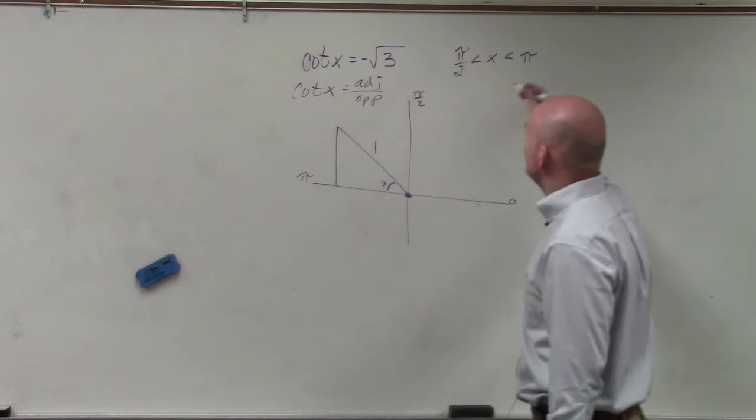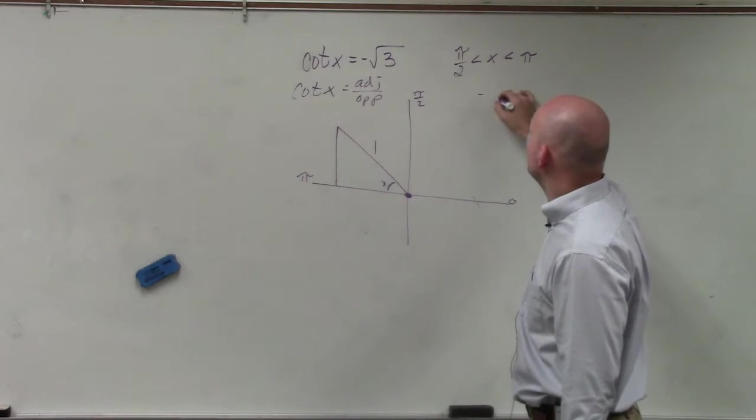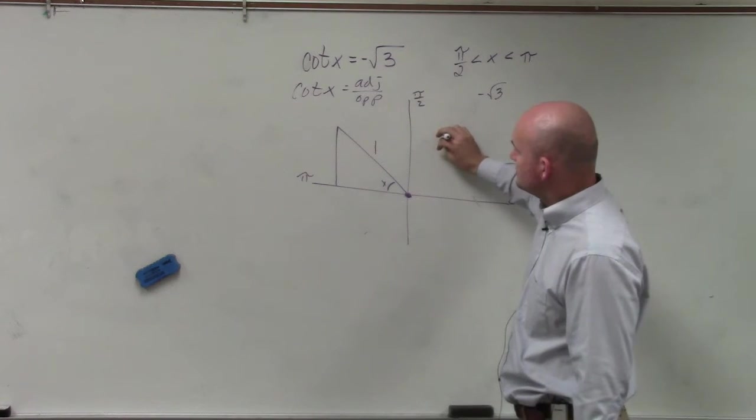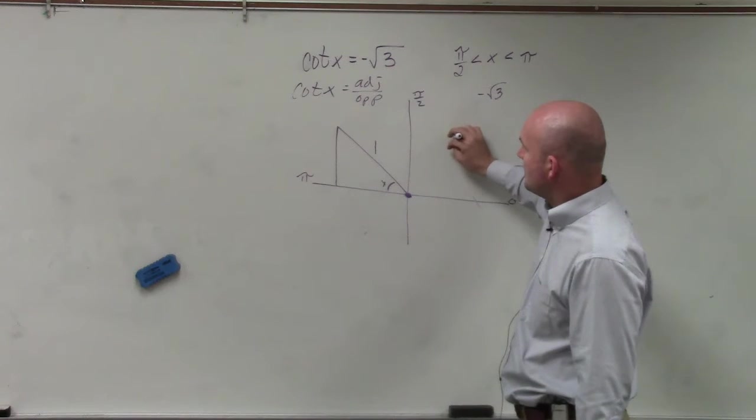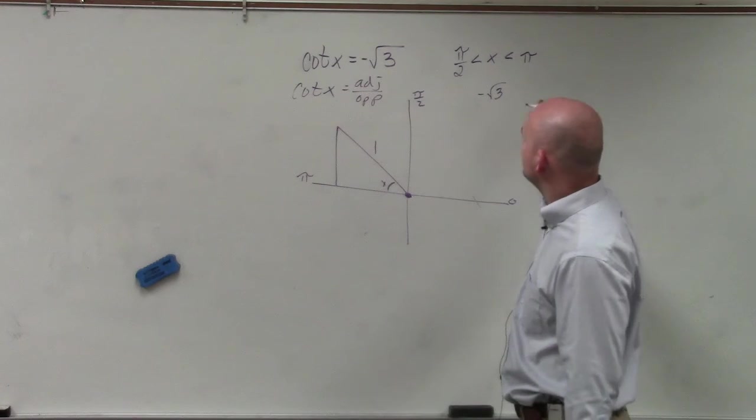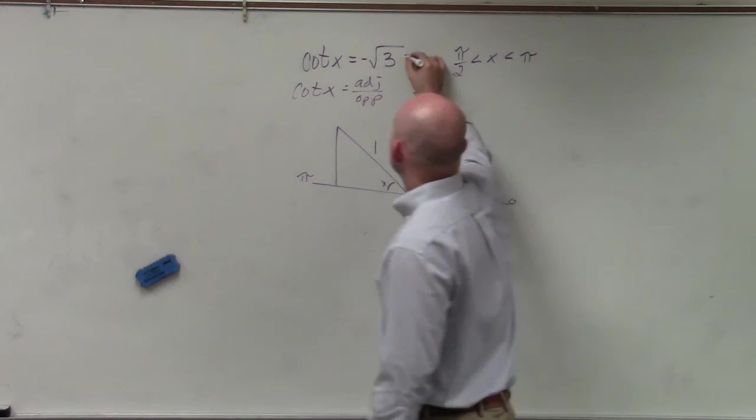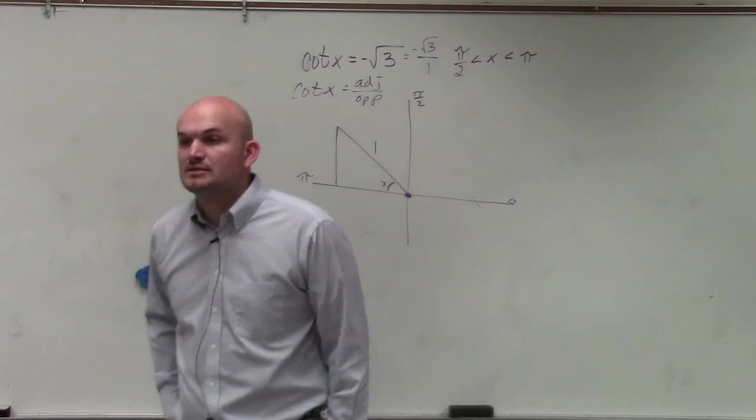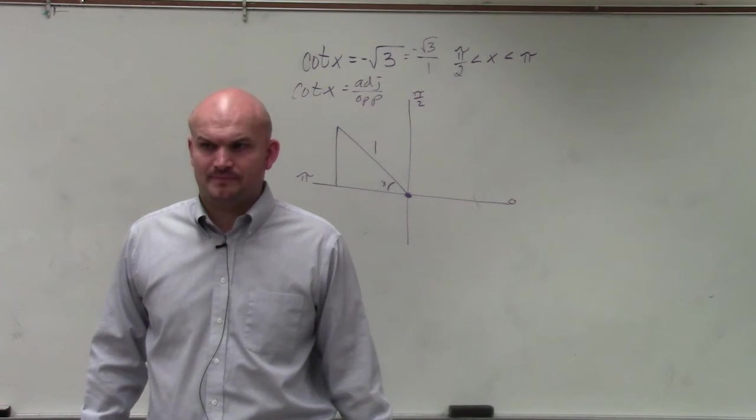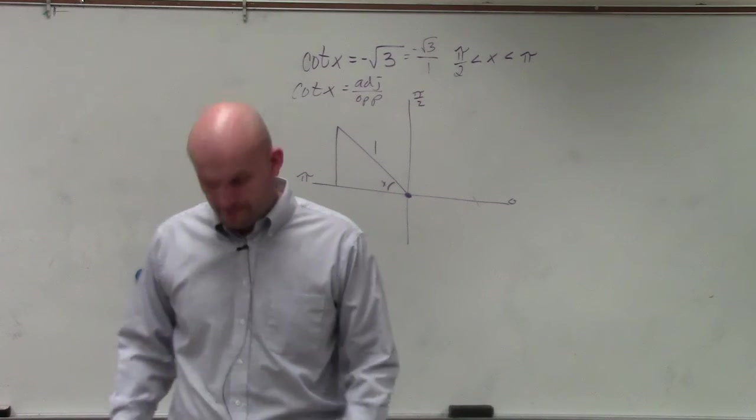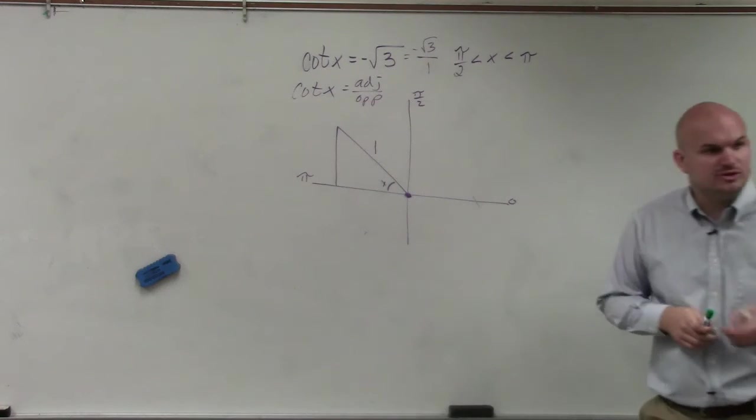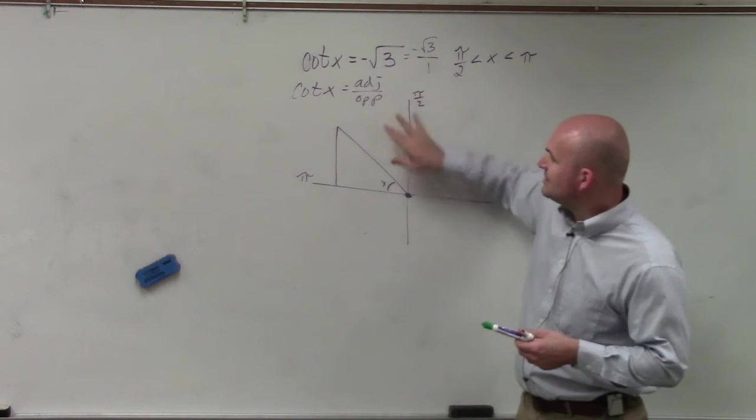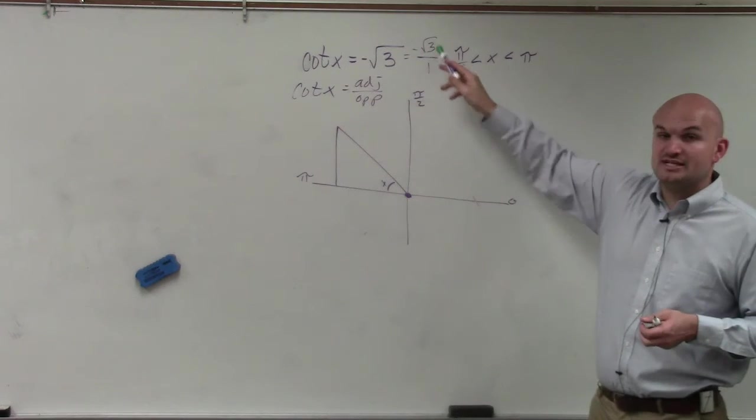So what we could do is we could think about this. We could rewrite this as negative square root of 3 over 1. Actually, let me actually change that. So we could rewrite this as negative square root of 3 over 1. And actually, I messed up. We don't want that to be 1. Because look at it. This is adjacent over opposite.